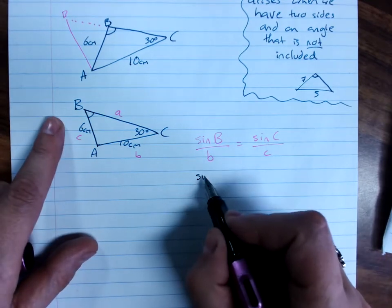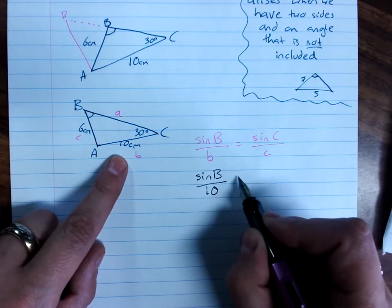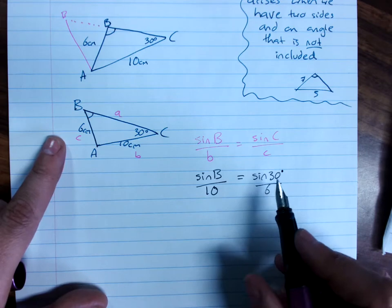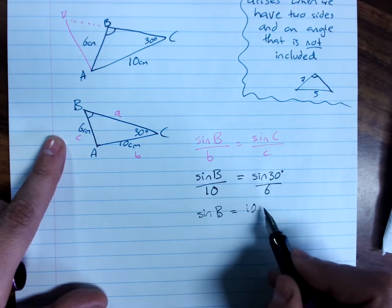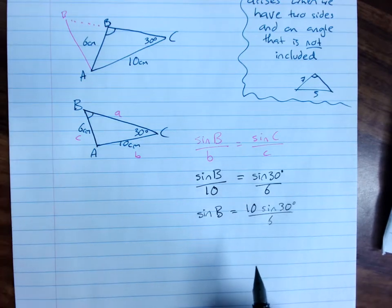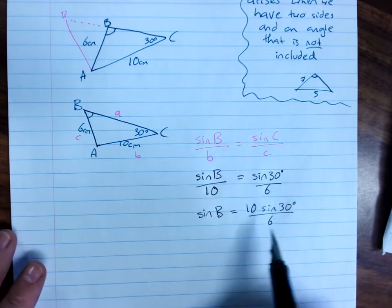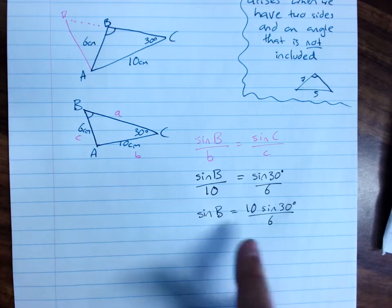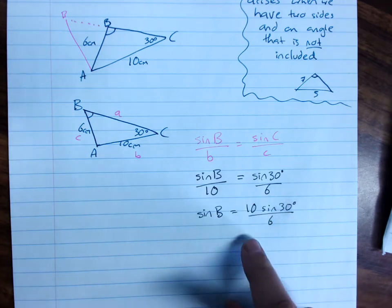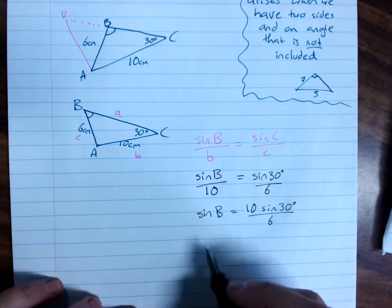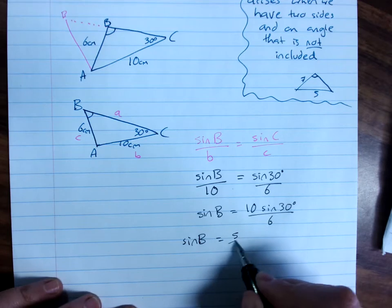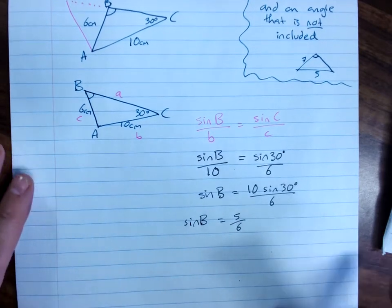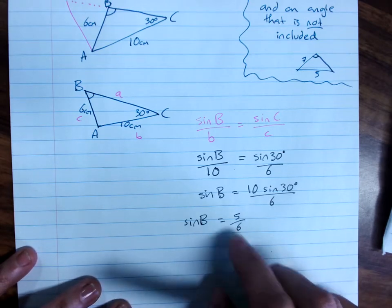Substitute your values. Sine B on 10 equals sine of 30 degrees on 6. Rearrange. Sine B equals 10 sine 30 degrees on 6. Now, what we might just do, because there's exact values for sine 30, is just very quickly check, because you could do this without your calculator. Sine of 30 degrees is a half. 10 times a half is 5. So actually, sine B is 5 on 6.